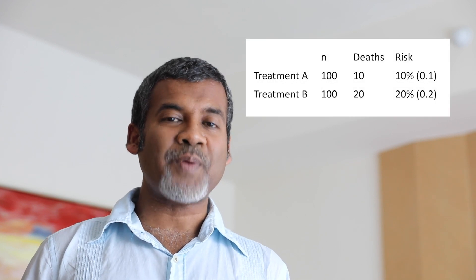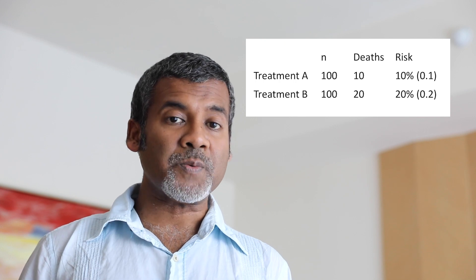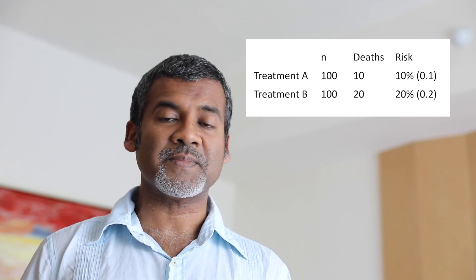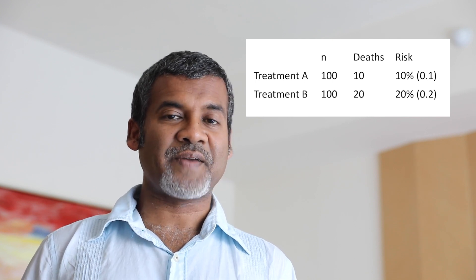And in group B — the patients who received the standard treatment — 20 patients have died. So what is the risk of death in group A, the patients who received the new treatment? That is 10% or 0.1 as a fraction. The risk of death in group B, the patients who received the standard treatment, is 20% or 0.2 as a fraction.